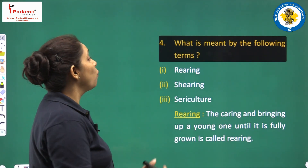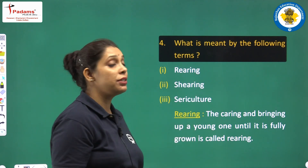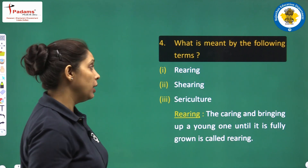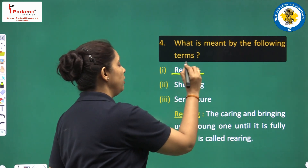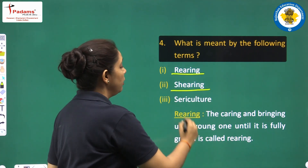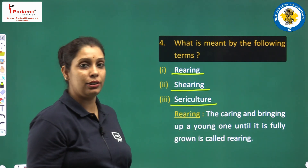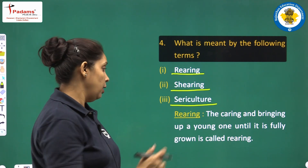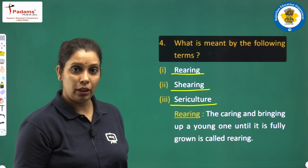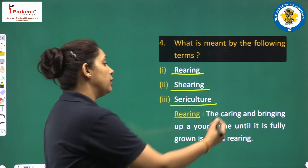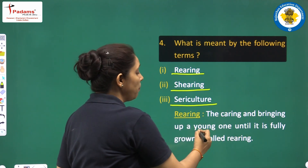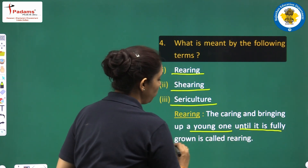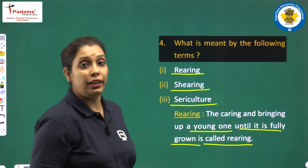Next question: what is meant by the following terms? You have to write down the definitions. First one is rearing. What we have to write: the caring and bringing up of a young one until it is fully grown is called rearing. This was explained in the wool section.